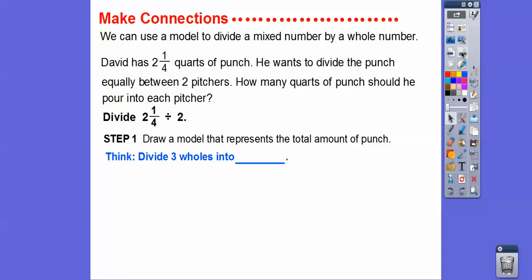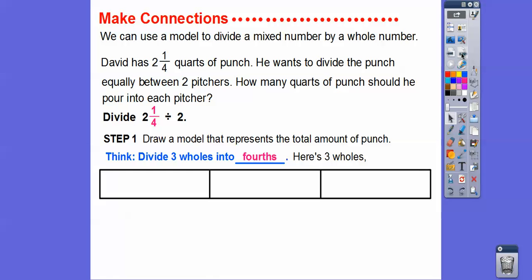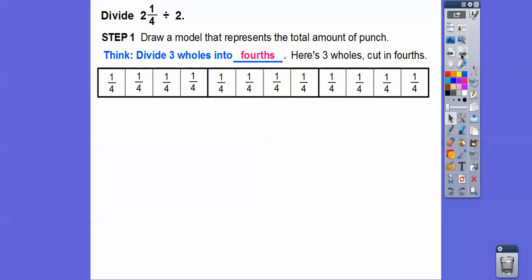So let's draw a model to represent the total amount of punch. So think, okay, we're going to divide three wholes into, because it's going to represent this 2 and 1/4, so we're going to divide three wholes into fourths right there to represent so we can cover the 2 and 1/4. So let's go ahead. Here's three wholes right here. So this would be one whole, two whole, three whole right here. So now we're going to cut those up into fourths. So there they are cut up into fourths right there.